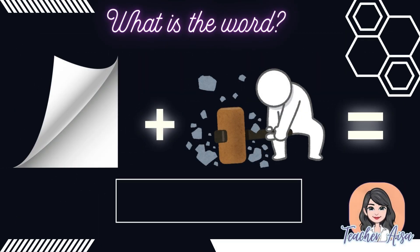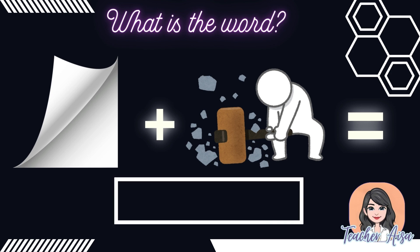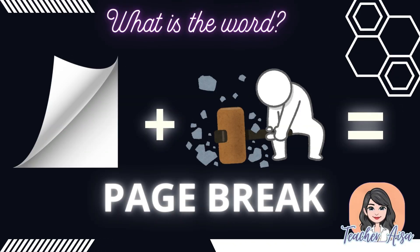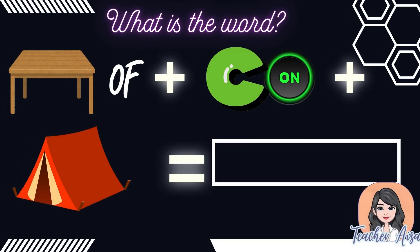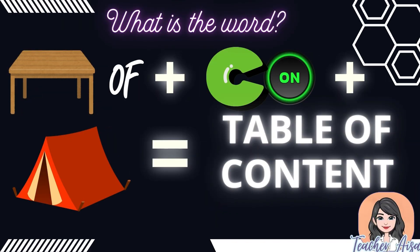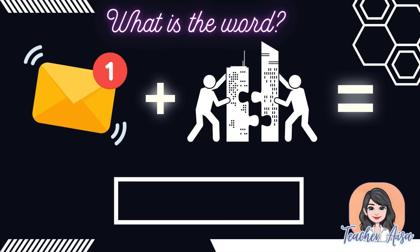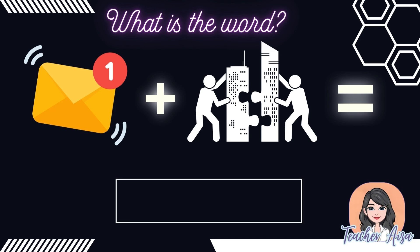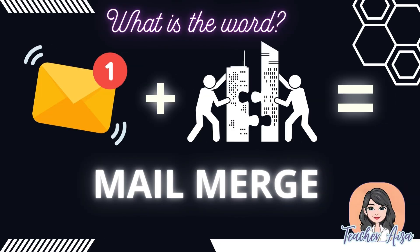Before we start our lesson, let us discover new words by answering the picture puzzle. Good job! It is page break. What do you think is the word? Correct! The word is table of content. Next, what do you think is the word? Correct! The word is mail merge. Let us uncover the meaning of the words while we are having our discussions.